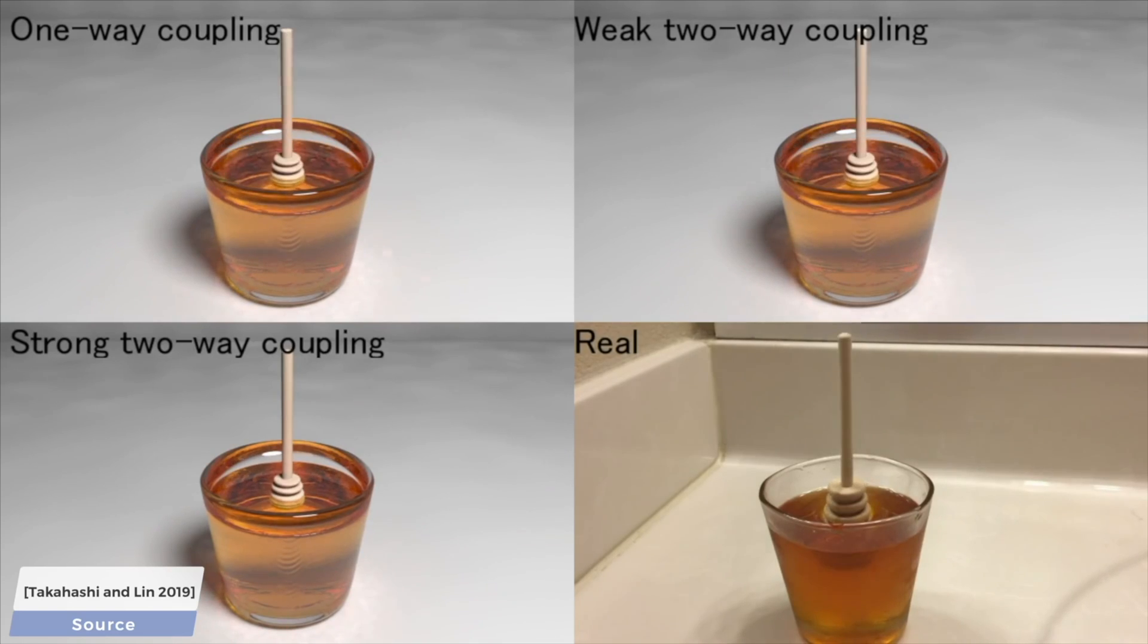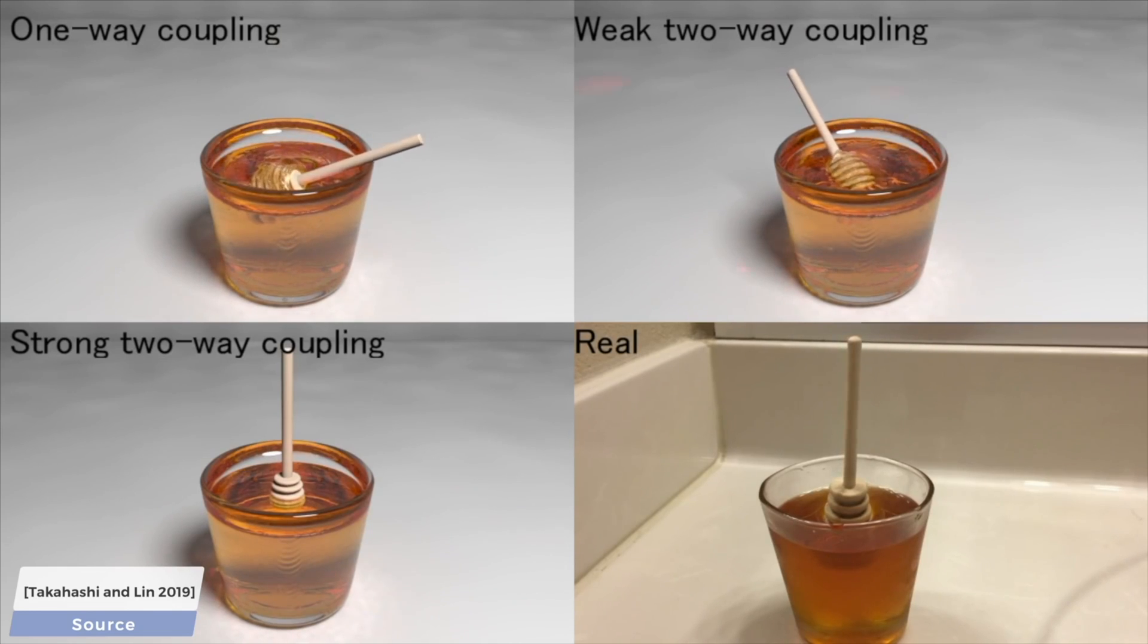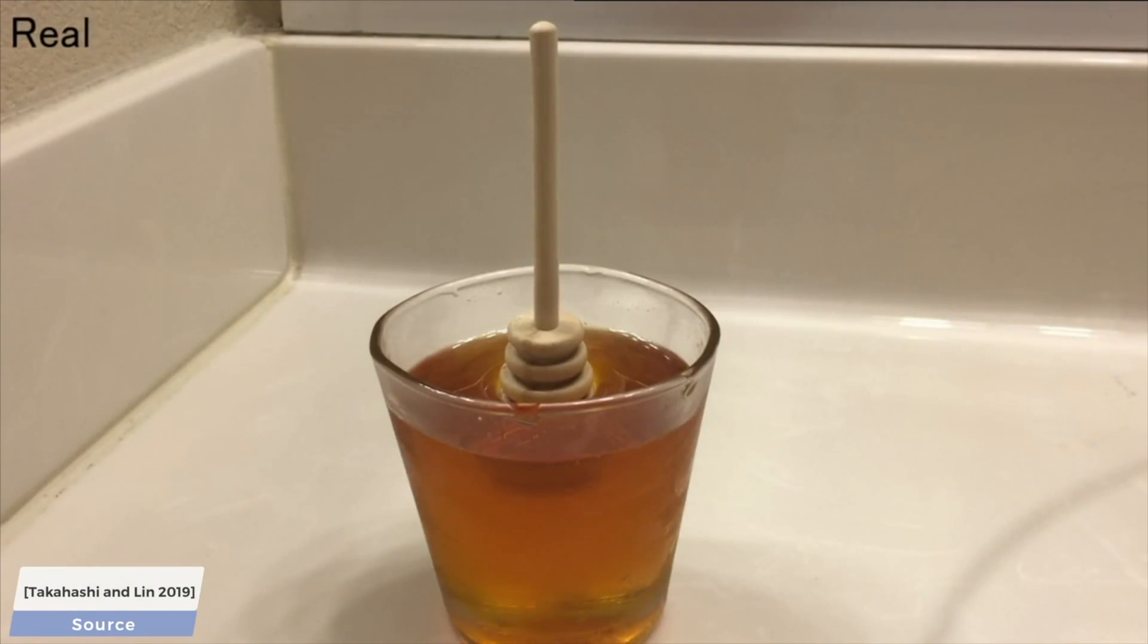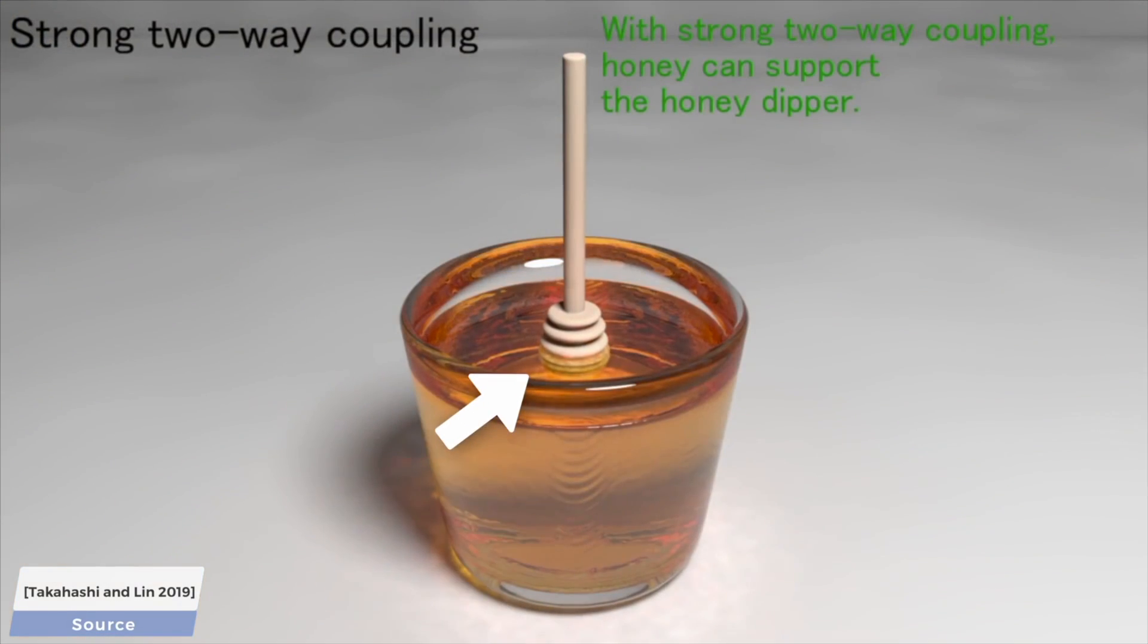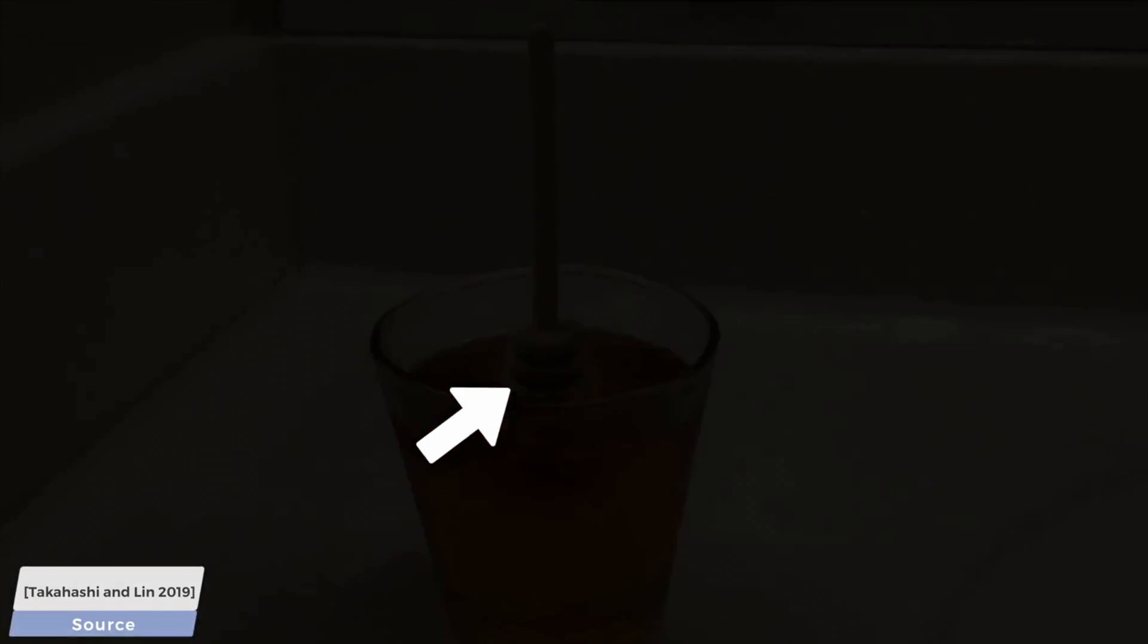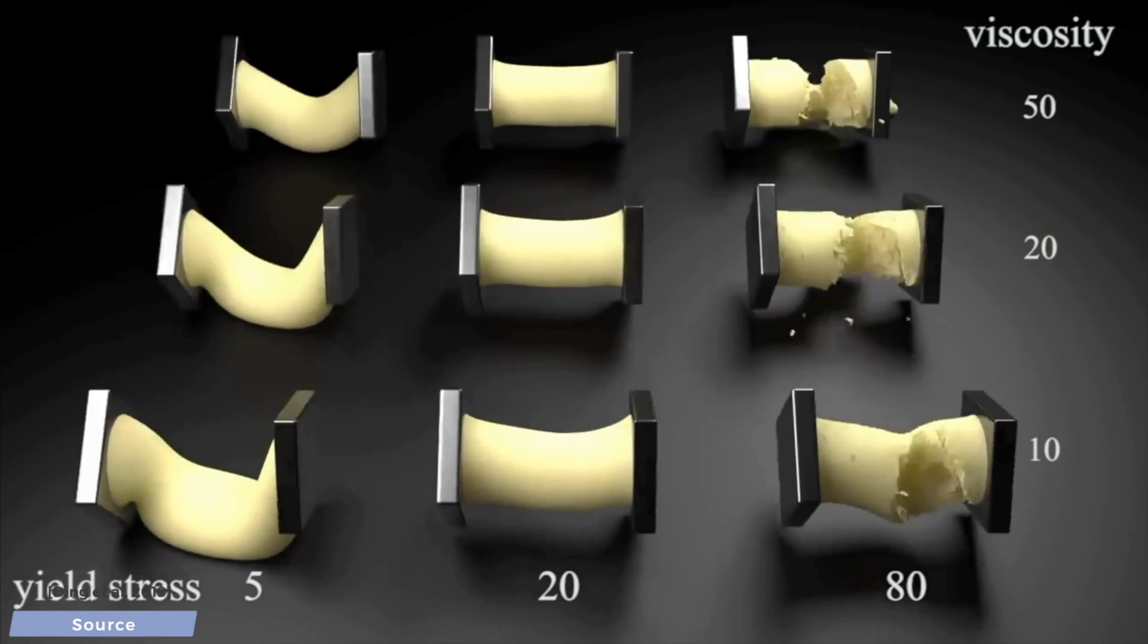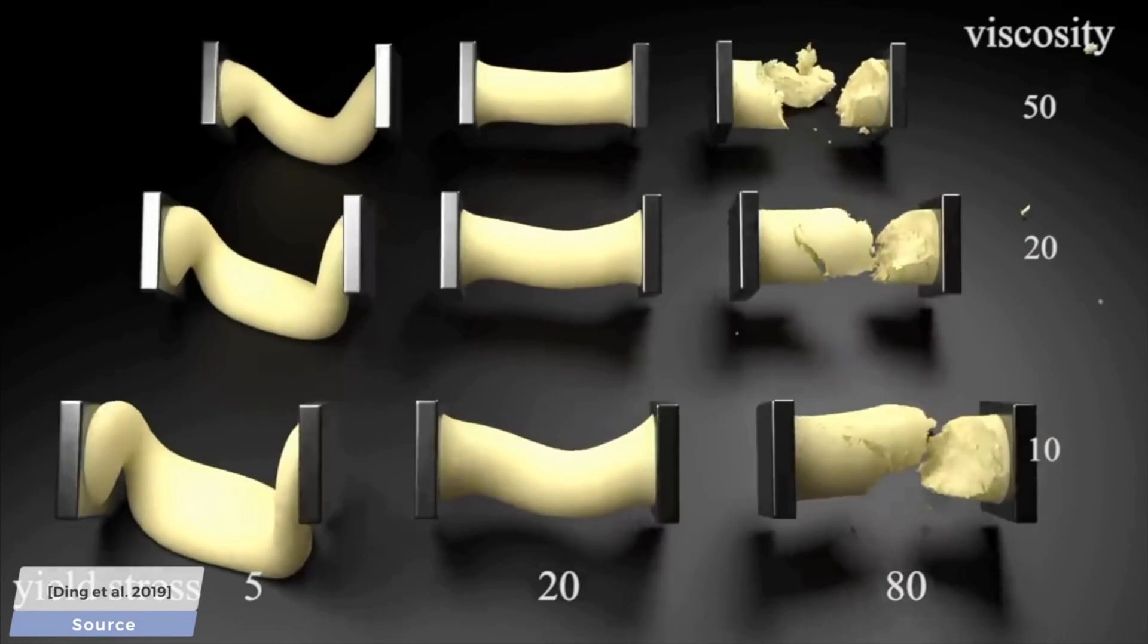However, many of you astute fellow scholars immediately ask, okay, but what kind of honey are we talking about? We can buy tens, if not hundreds of different kinds of honey at the market. If we don't know what kind of honey we are using, how do we know if this simulation is too viscous or not viscous enough? Great question.